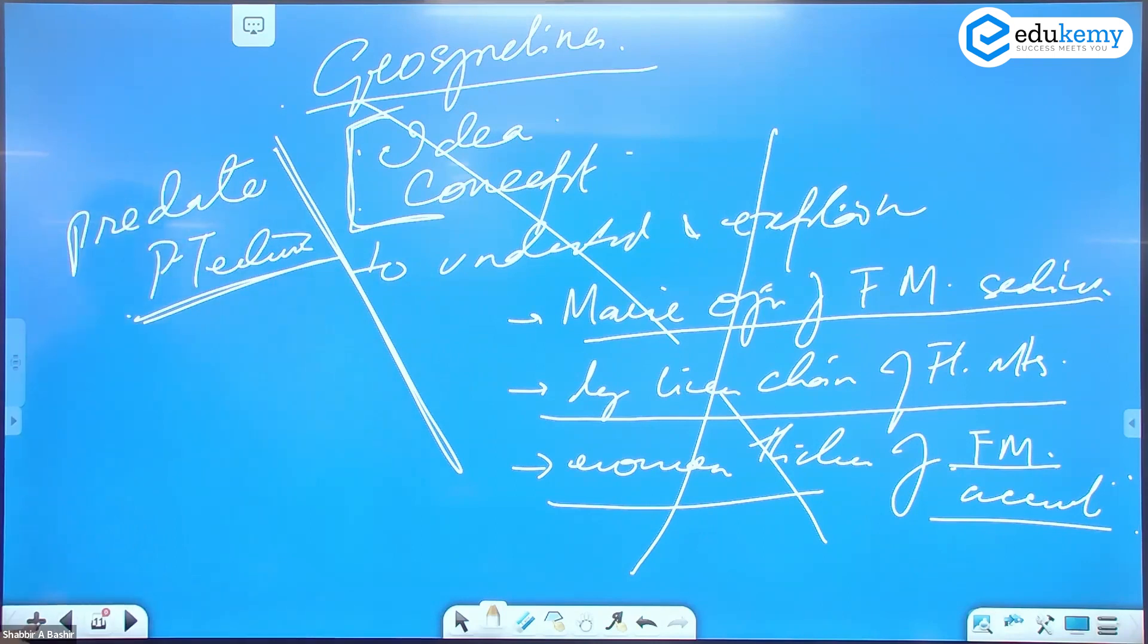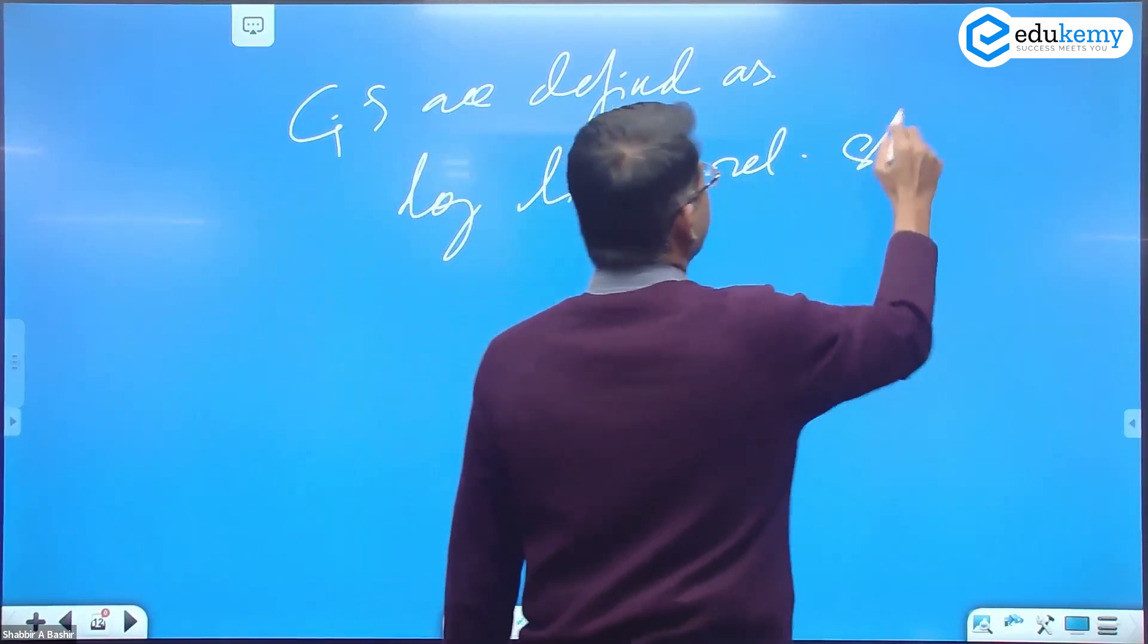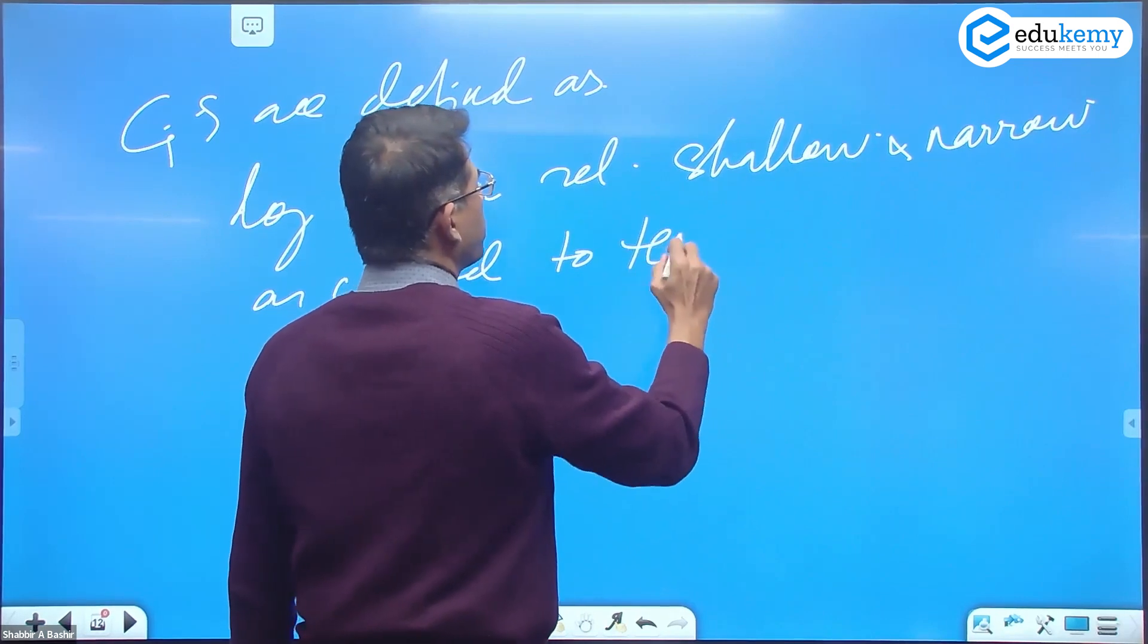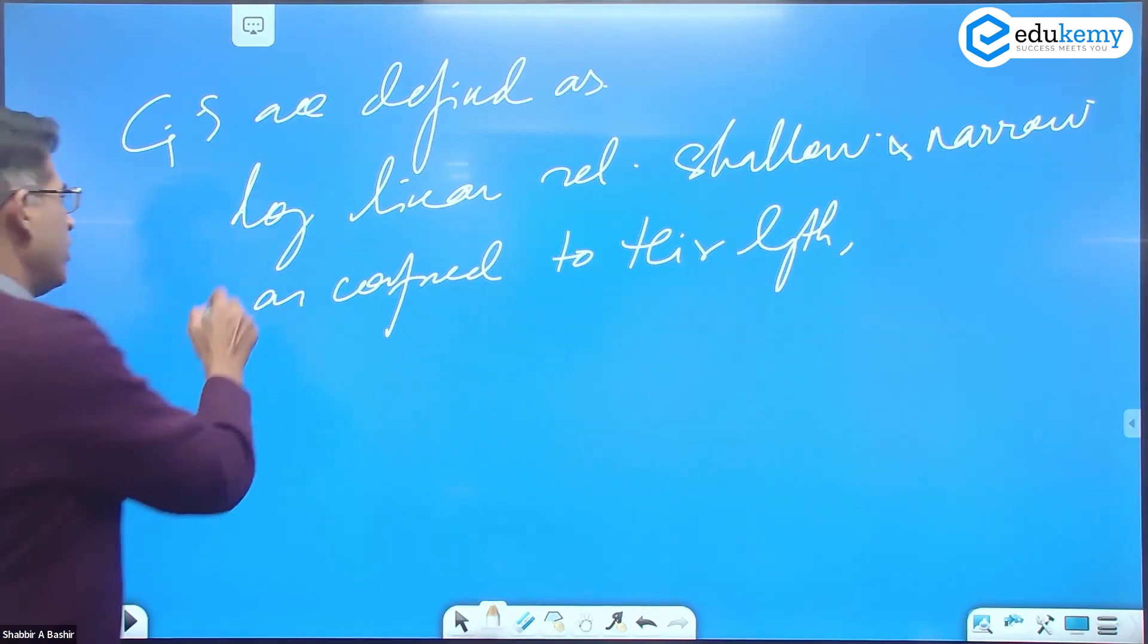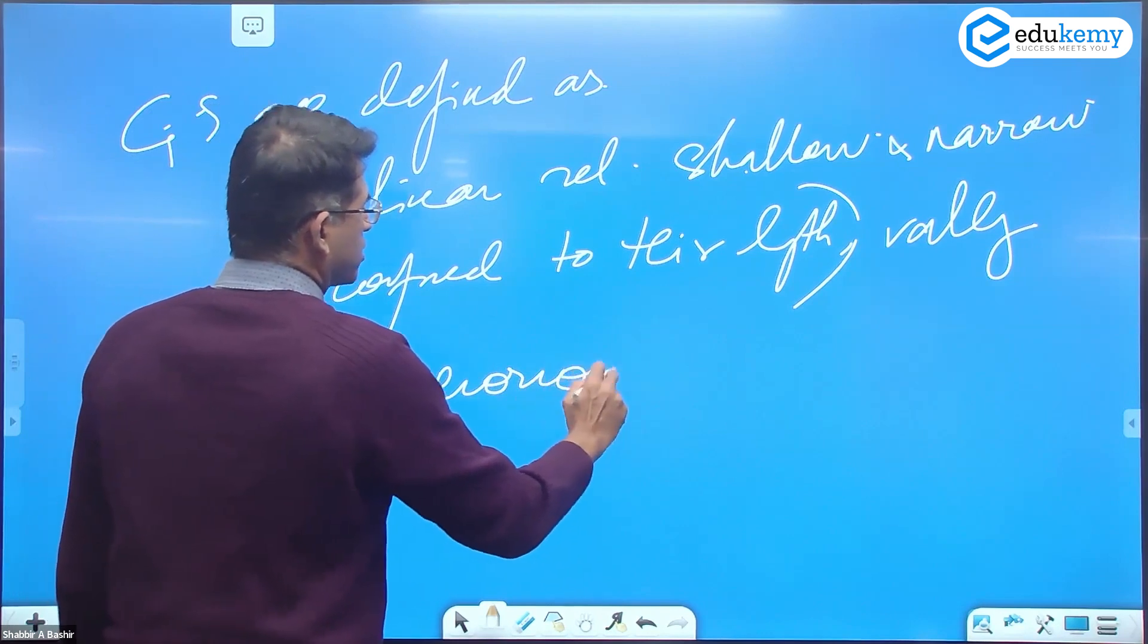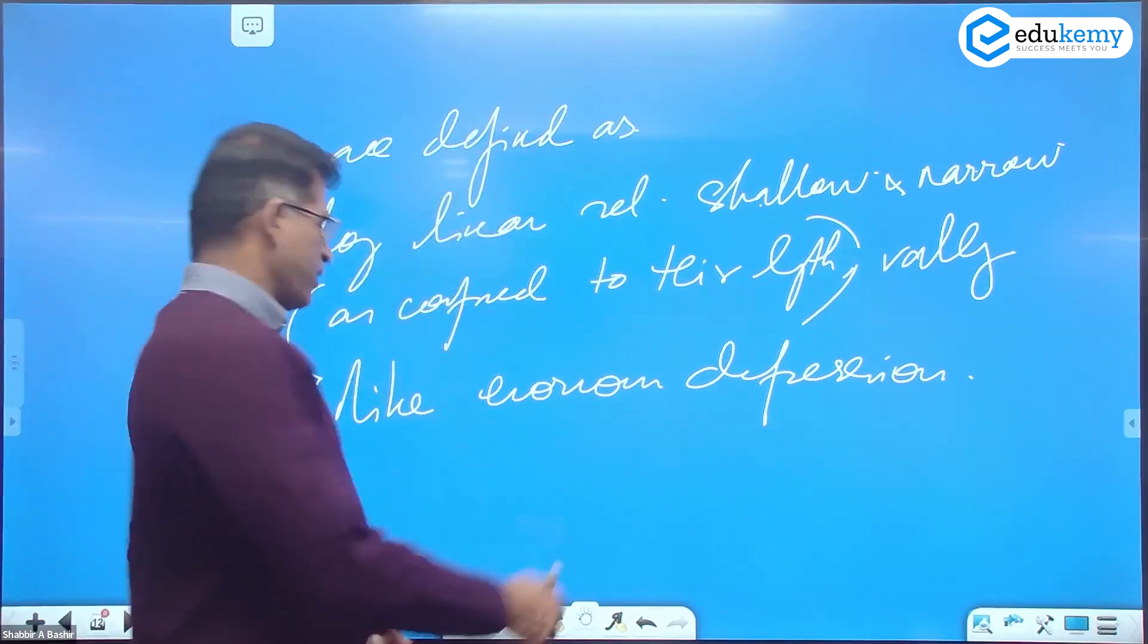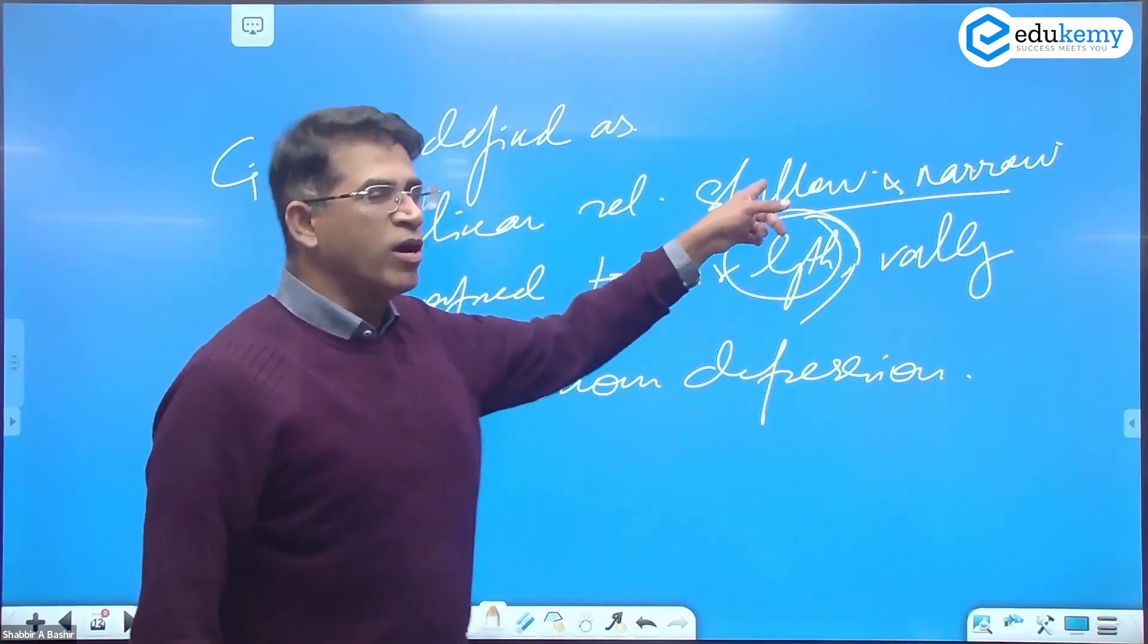Now, geosynclines are defined as long, linear, relatively shallow, as compared to, relatively shallow and narrow, and narrow, as compared to their length. They are long, linear, relatively shallow and narrow, as compared to length, narrow and shallow, valley-like, enormous depressions. What are geosynclines? Geosynclines are defined as long, linear, relatively shallow and narrow. So shallow and narrow, compared to what? Compared to the length. Shallow, I do not mean 1 meter, 2 meter. Narrow, I do not mean half a meter.